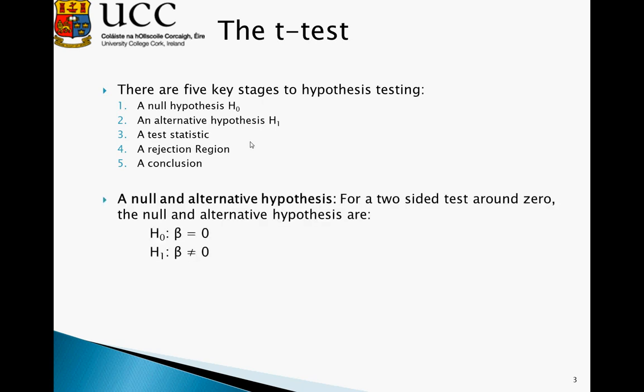So here's a simple example of a null and alternative hypothesis. This is probably the most commonly used one when we look at econometrics. We are testing whether the beta coefficient is equal to zero or not equal to zero. It's a two-tailed test in that we're not concerned whether beta is positive or negative, merely that it differs significantly from zero.